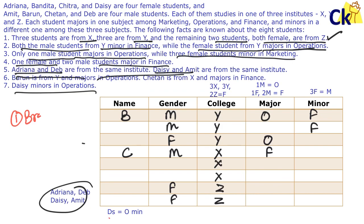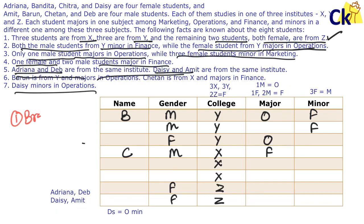Step one was data entry — I've added all data into the system. Now I use my brain. Daisy's minor is operations — I don't know where to park her yet. The three females with minor marketing — I can't place yet, so I'll set that aside. Adriana and Deb form one pair; Daisy and Amitraj form another. The two Z students can't be this pair since both Z are female. Chetan is already placed in X.